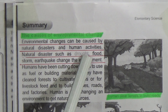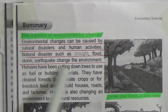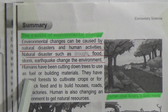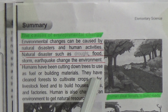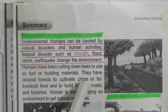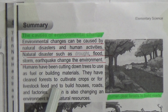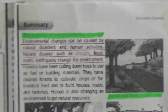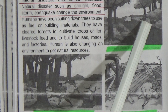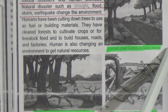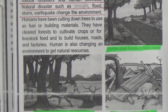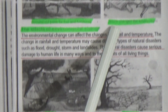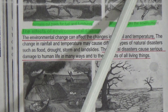Natural disasters such as drought, flood, storm, and earthquake change the environment. Humans have been cutting down trees to use as fuel or building materials. They have cleared forests to cultivate crops or for livestock feed and to build houses, roads and factories. Humans are also changing the environment to get natural resources. Pictures show humans clearing forests to build roads, humans cutting trees for fuel and furniture, and storms changing the environment.